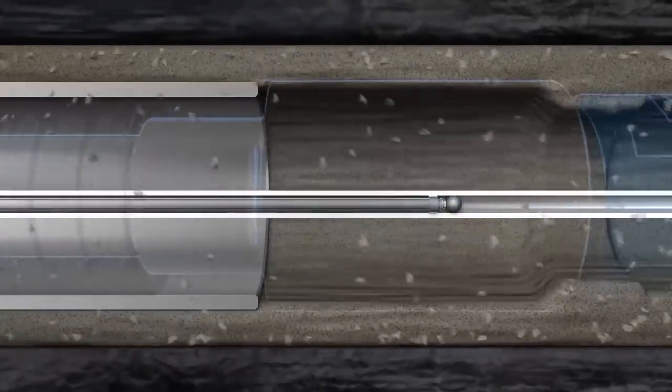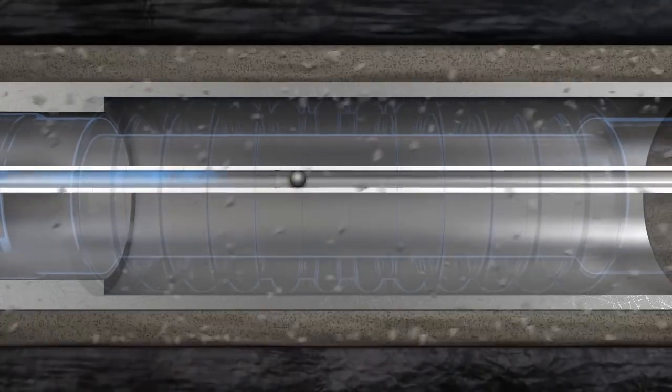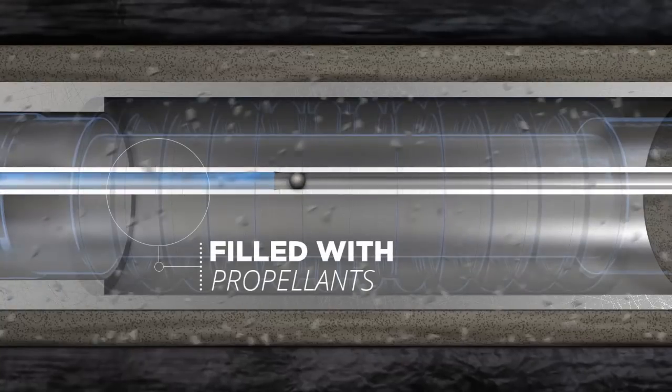The plunger and projectile then pull back and are seated ahead of the breach at the same time, evacuating the launch tube. The plunger retracts and the breach is filled with a combustible mixture of simple industrial chemical propellants.